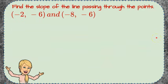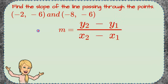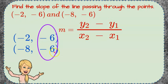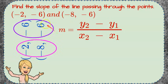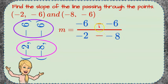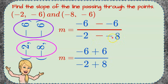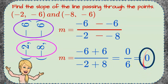Here's another one for you — pause the video and come back when you're done. Welcome back. Using our slope formula, we stack the ordered pairs, identify y and x coordinates, and flip it into ratio form. We get negative six minus negative six over negative two minus negative eight, which becomes negative six plus six over negative two plus eight: zero over six. Zero divided by any value is zero, so we have a slope of zero — this is a horizontal line.